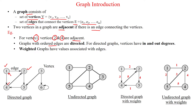Graphs with ordered edges are directed. If an edge is having an arrow, then that kind of graph is called a directed graph. If the graph has no arrows, it is called an undirected graph, where the transition can be made from vertex 1 to 2 and also from 2 to 1. There are no arrows to represent the direction between two vertices.